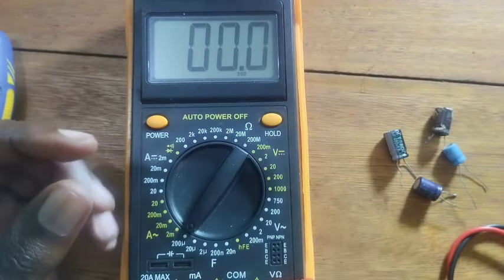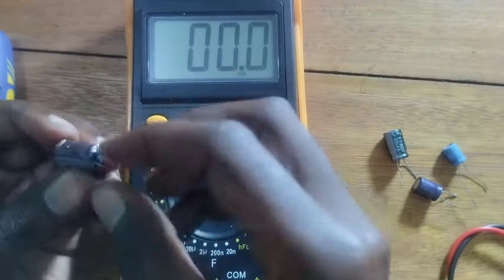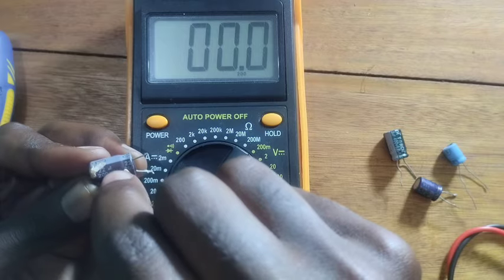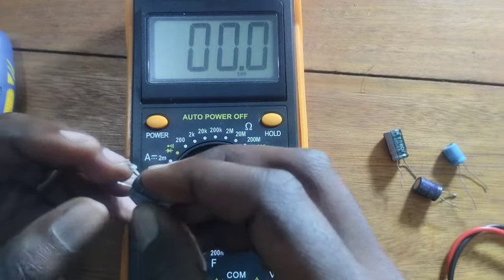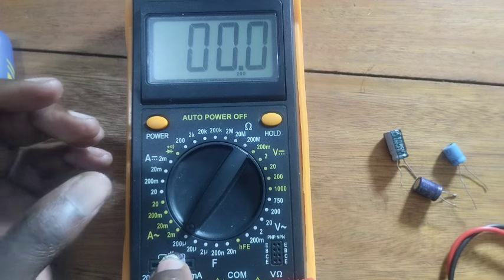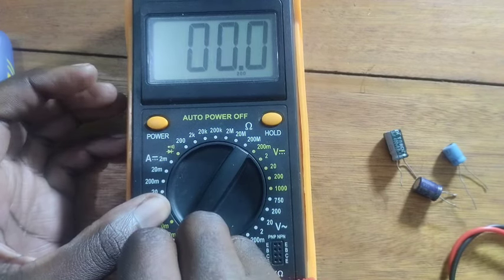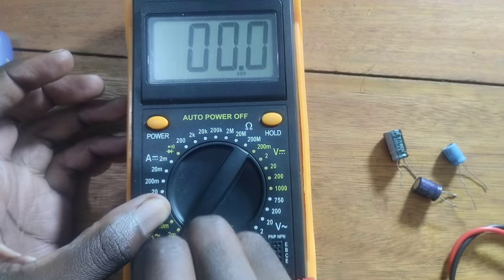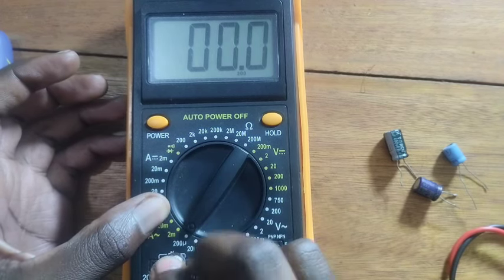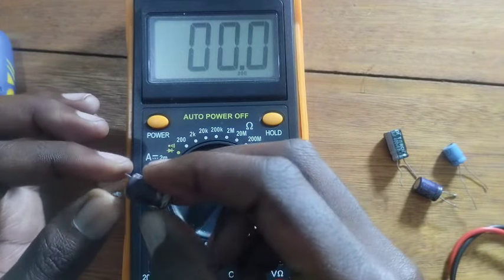We have this one which is 22 microfarads, negative and positive. This means that it is bad, it's bulging. A bulging capacitor is bad.